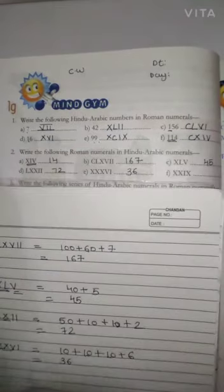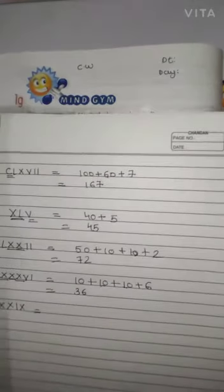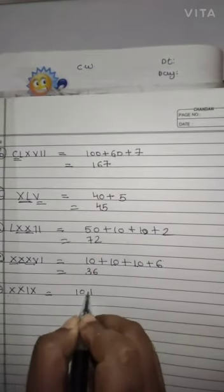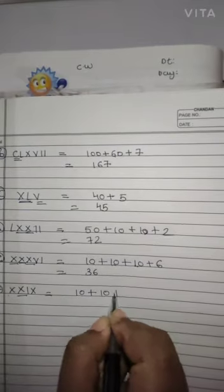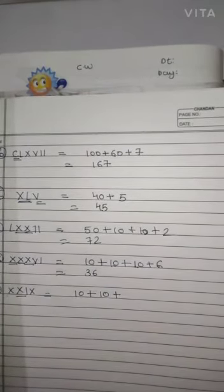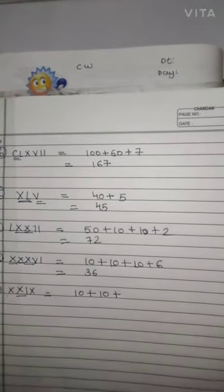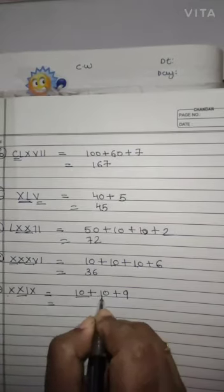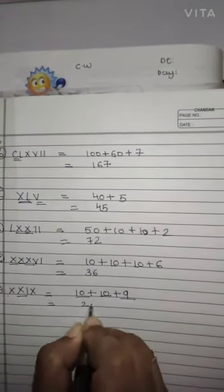Question number F is XXIX. X के लिए हम लिखेंगे 10, another X के लिए 10, and IX के लिए आएगा 9. तो number क्या बन जाएगा? 10 plus 10 equals 20, and 20 plus 9 equals 29.